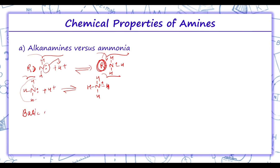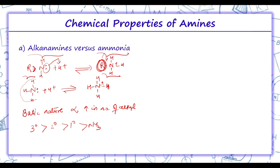The basic nature of aliphatic amines is directly proportional to the increase in number of alkyl groups, meaning tertiary > secondary > primary > ammonia. However, this trend is not regular in the aqueous state because pKb values change — the electron-releasing effect is not only due to the +I effect but also solvation with water molecules. Greater the size of the ion, lesser the solvation and less stabilized is the ion. So in aqueous state, primary is more basic than secondary, then tertiary — opposite to the inductive effect.